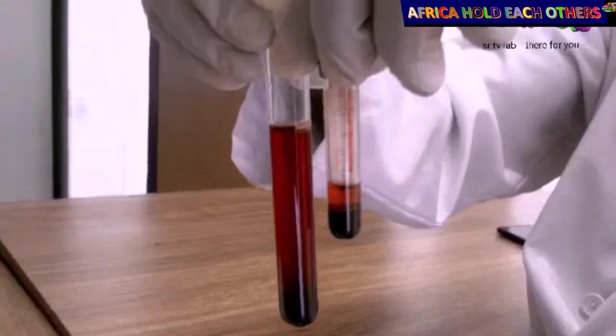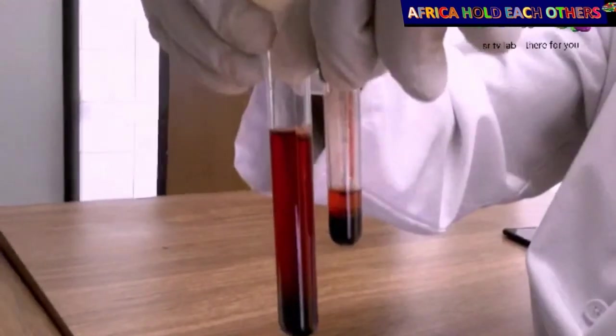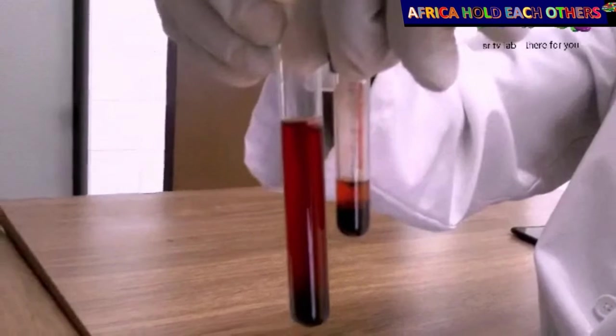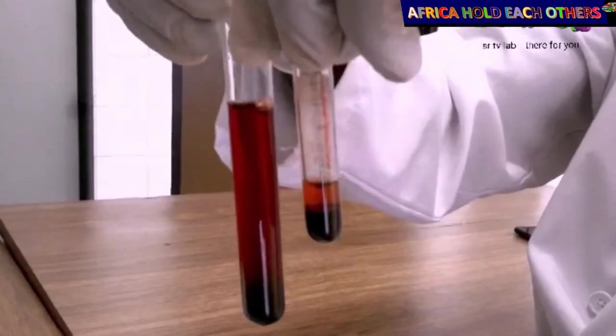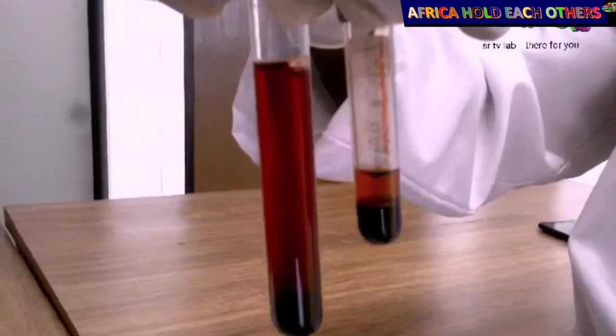This small tube has normal blood. The upper part is plasma. The lower part is concentrated red blood cells.